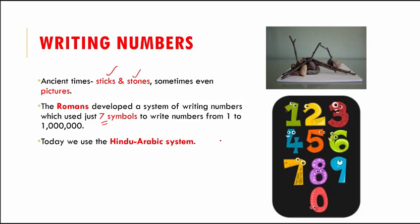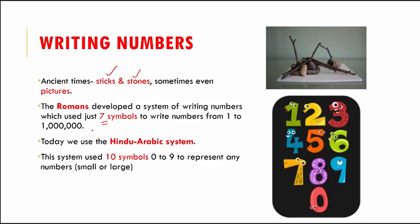Today we use the Hindu-Arabic system to count numbers. This system was developed in India nearly two thousand years ago. The Arabs took it to Europe, and it spread worldwide — so this is something to feel proud about! Even zero was invented in India. The Hindu-Arabic system uses ten symbols: zero through nine. These ten symbols are used to represent any number, whether small or very large.